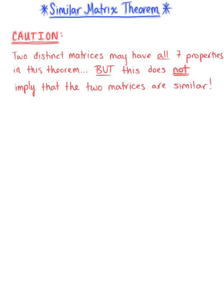The similar matrix theorem makes the assumption at the beginning that matrix A and matrix B are similar, and then those properties hold true. However, the reverse does not necessarily hold true. And we can easily verify this with the example.